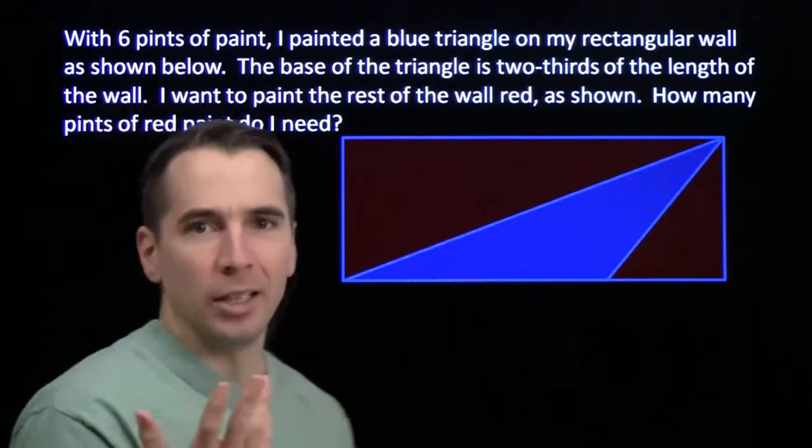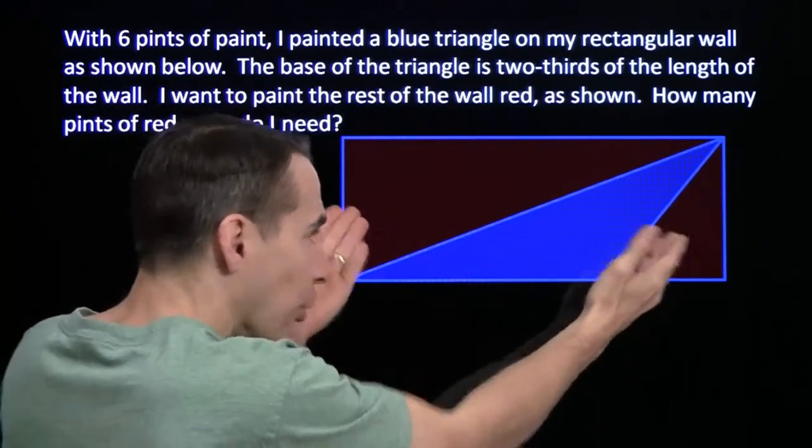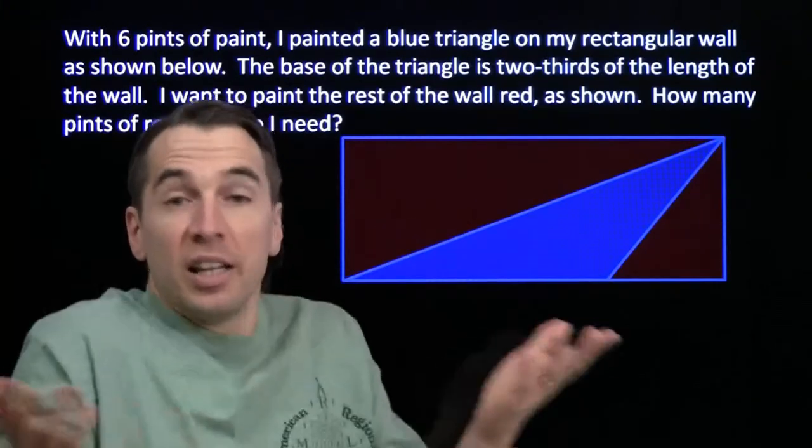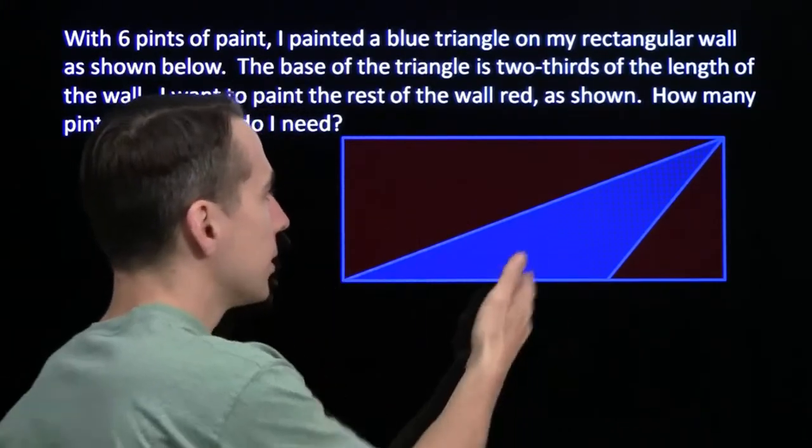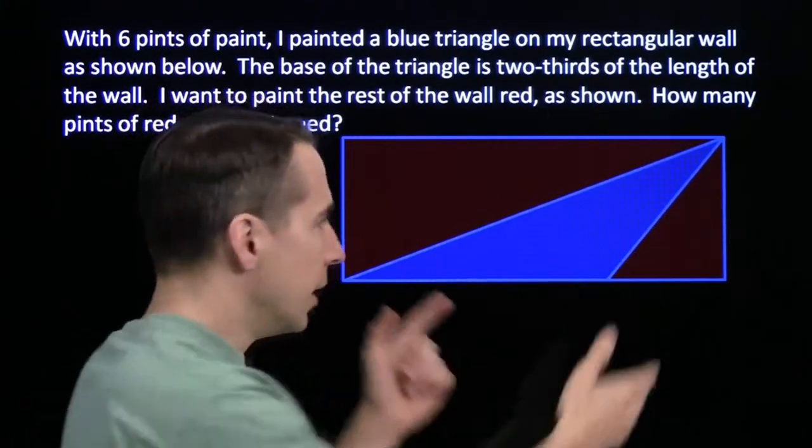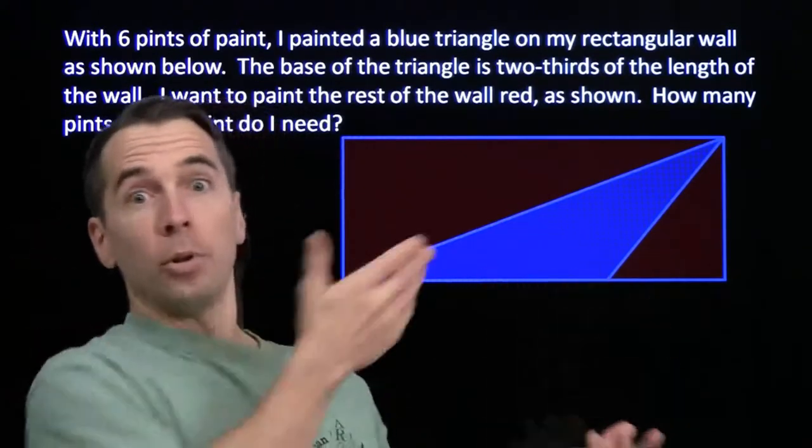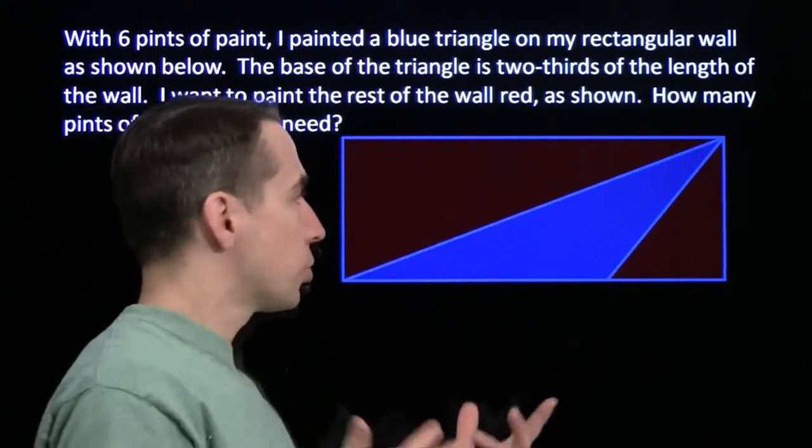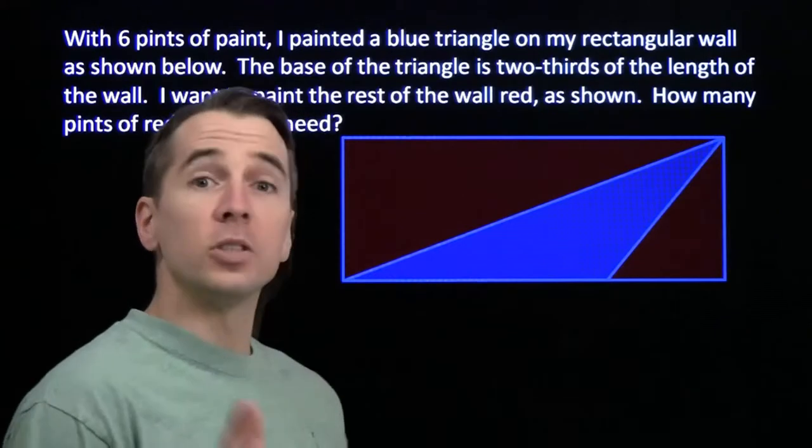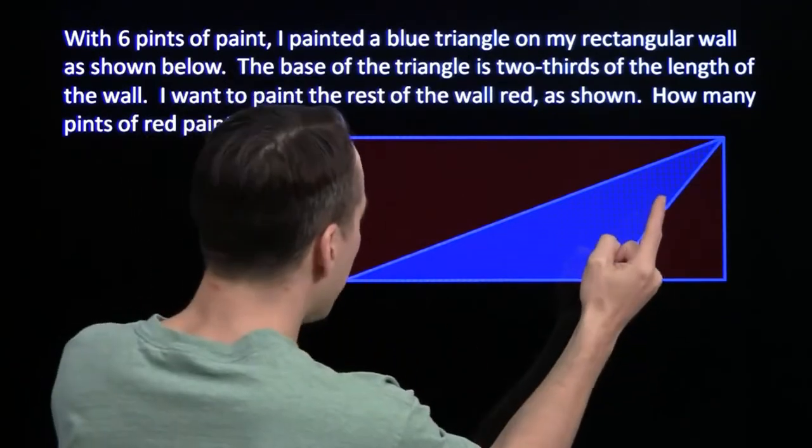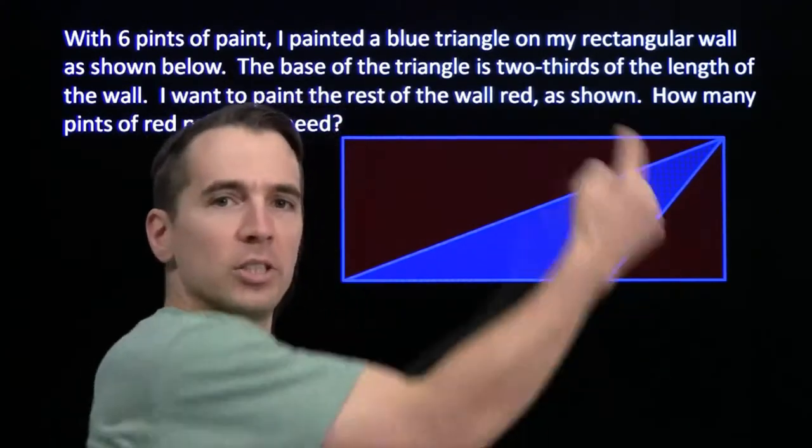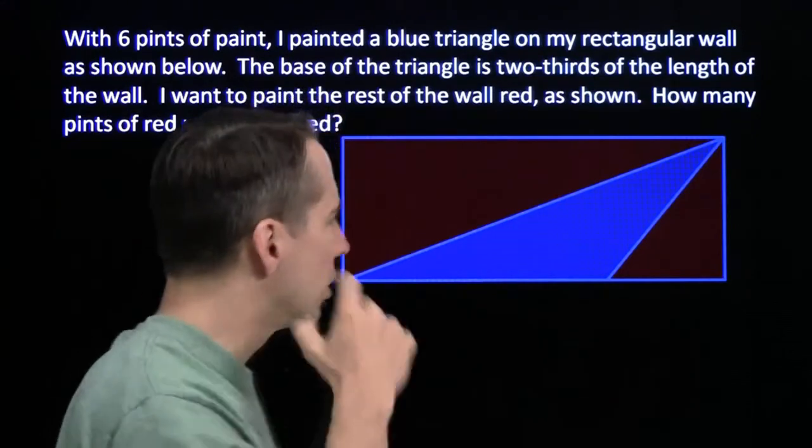It's basically an area problem. If the red area, if the total red area is the same as the blue area, then I need six pints of red paint because I need six pints of blue paint for this. If the red area is double the blue area, then I need 12 pints. If it's triple the area, I need 18 pints and so on. So I need to compare the area of the red regions to the area of the blue region.